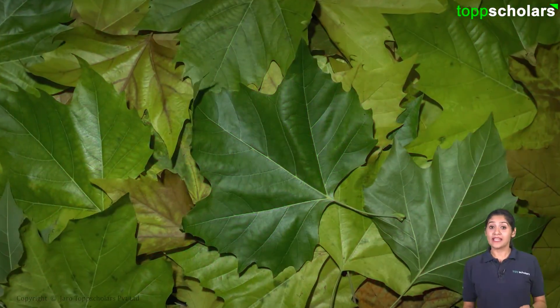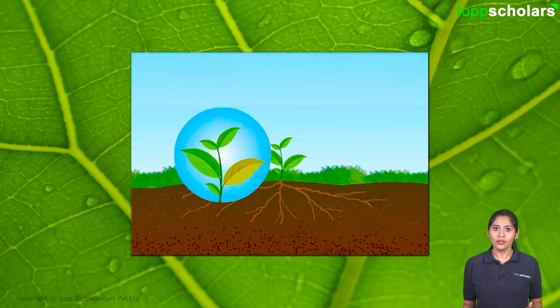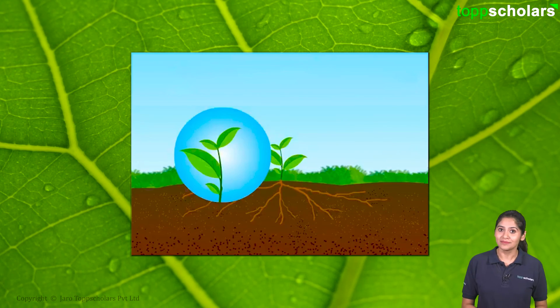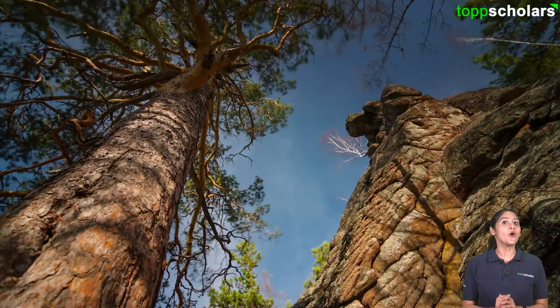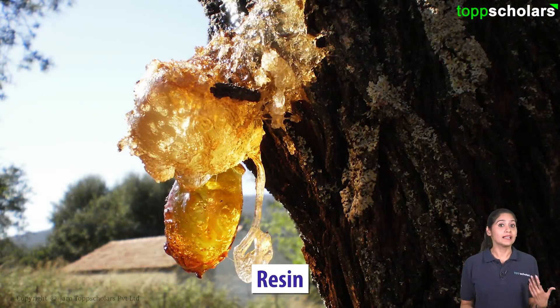They direct and store their waste materials into vacuoles of dying old tissues, and when the plant part is shed off, they basically get rid of the waste material as well. They also secrete materials like resin, gums, and latex that are very important to us.